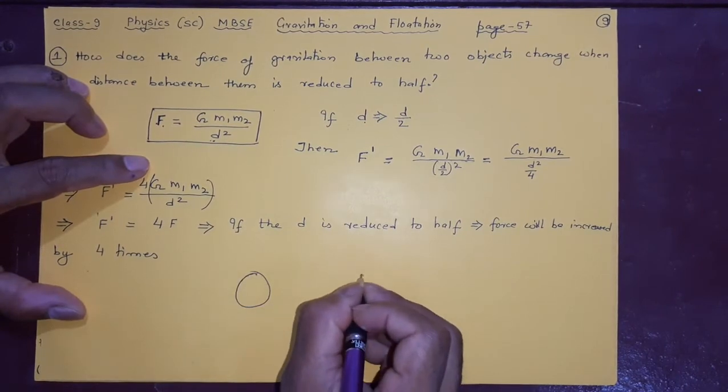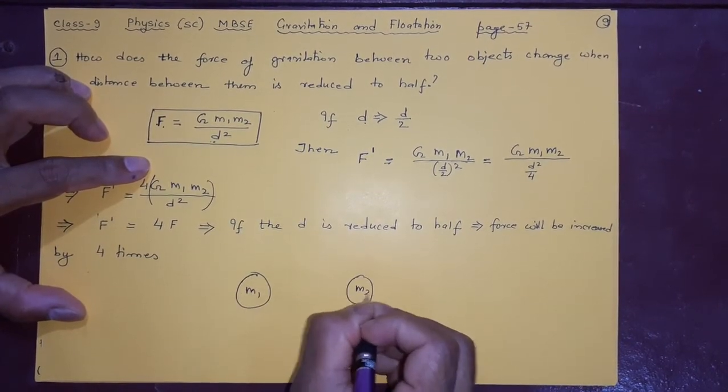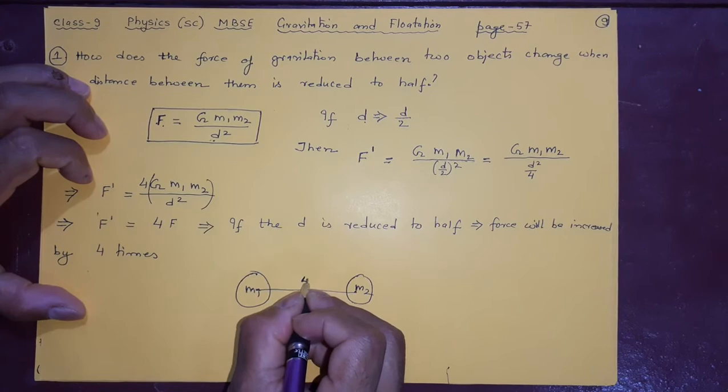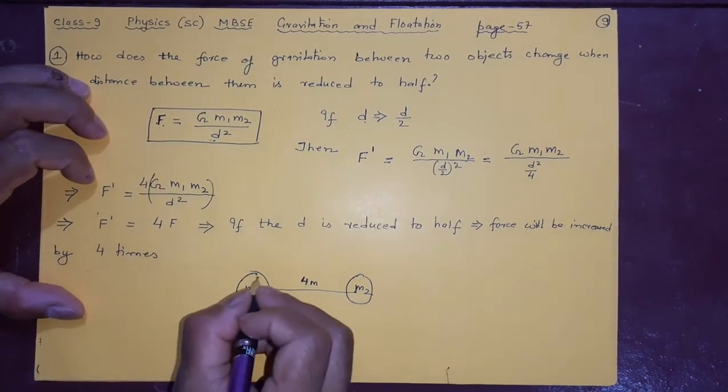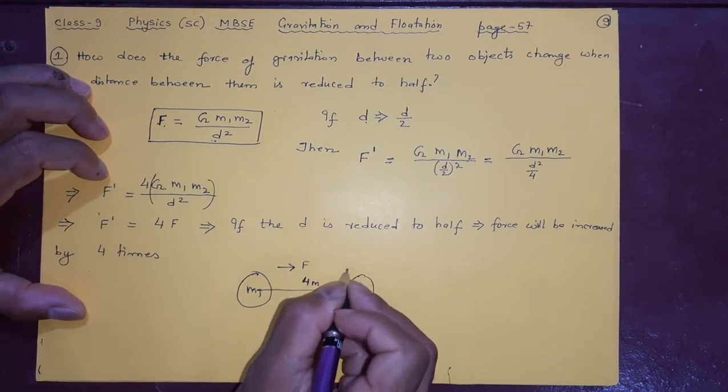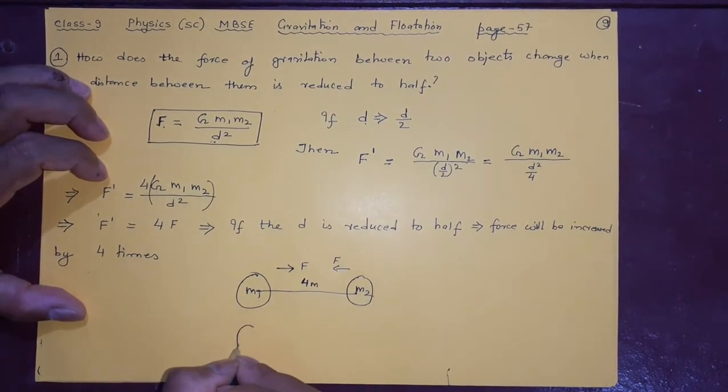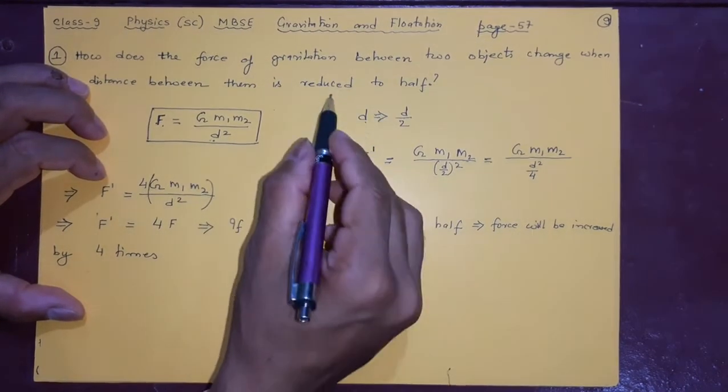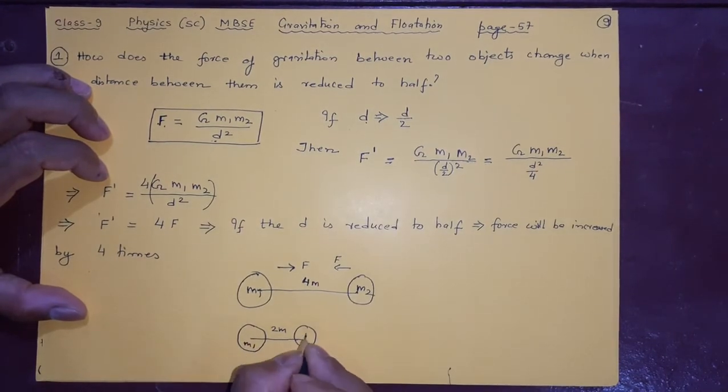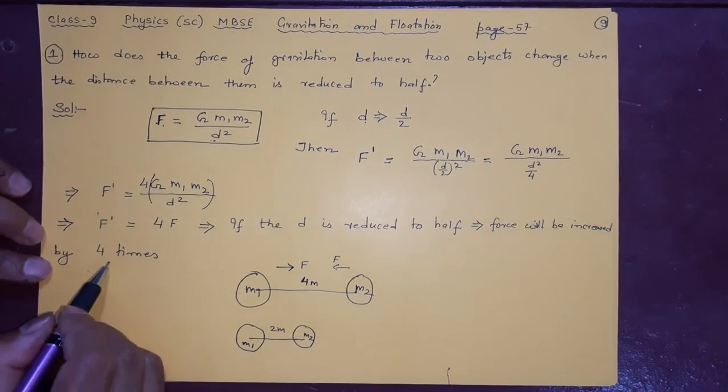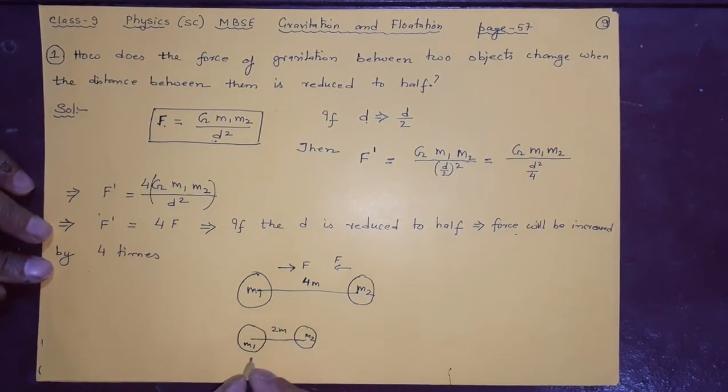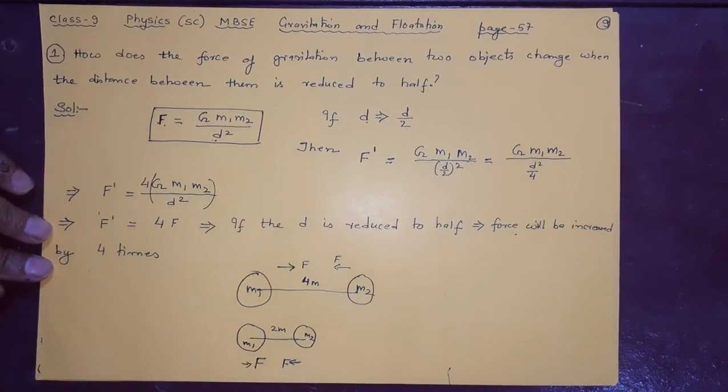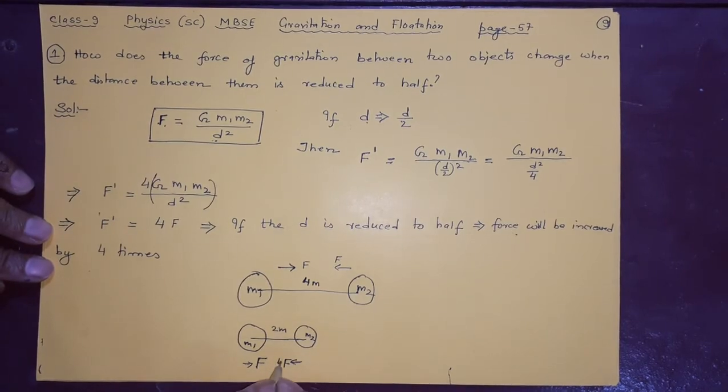Suppose you have one object, another object, m1, m2. Between them suppose they are some 4 meter. Now there is some force between them. Now if I bring them half closer, that means if I bring them 2 meter, reduced to half means 2 meter, what will happen? Very easy to understand. They will pull each other very strongly. The force will increase. This F earlier will become very very strong. Why? Because they are very near now. So this F is four times.